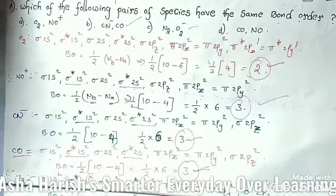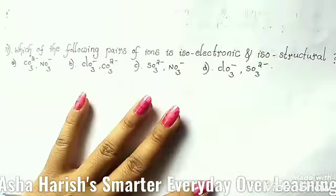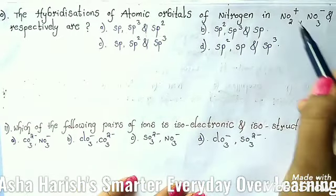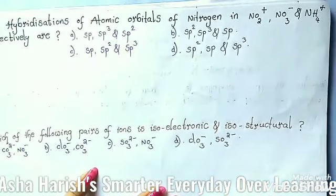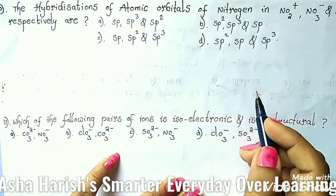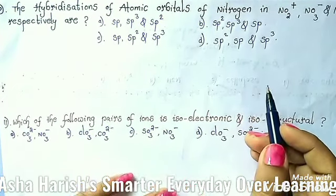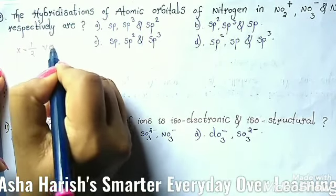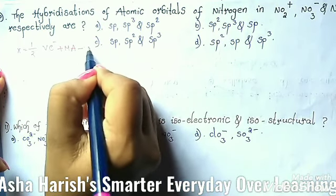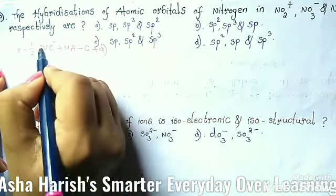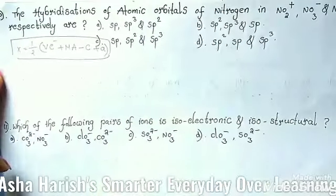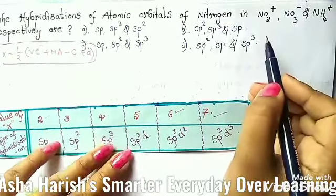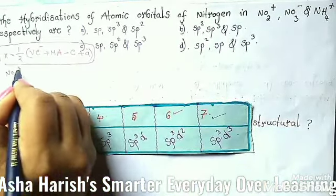Let's move to Question 10: the number of atomic orbitals of nitrogen in NO2+, NO3⁻, and NH4+ respectively. To find hybridization, we use the formula: x = ½ × (valence electrons + monovalent atoms - cation charge + anion charge). For NO2+, nitrogen is the central atom. Nitrogen has atomic number 7, with electronic configuration 1s², 2s², 2p³, giving 5 valence electrons.